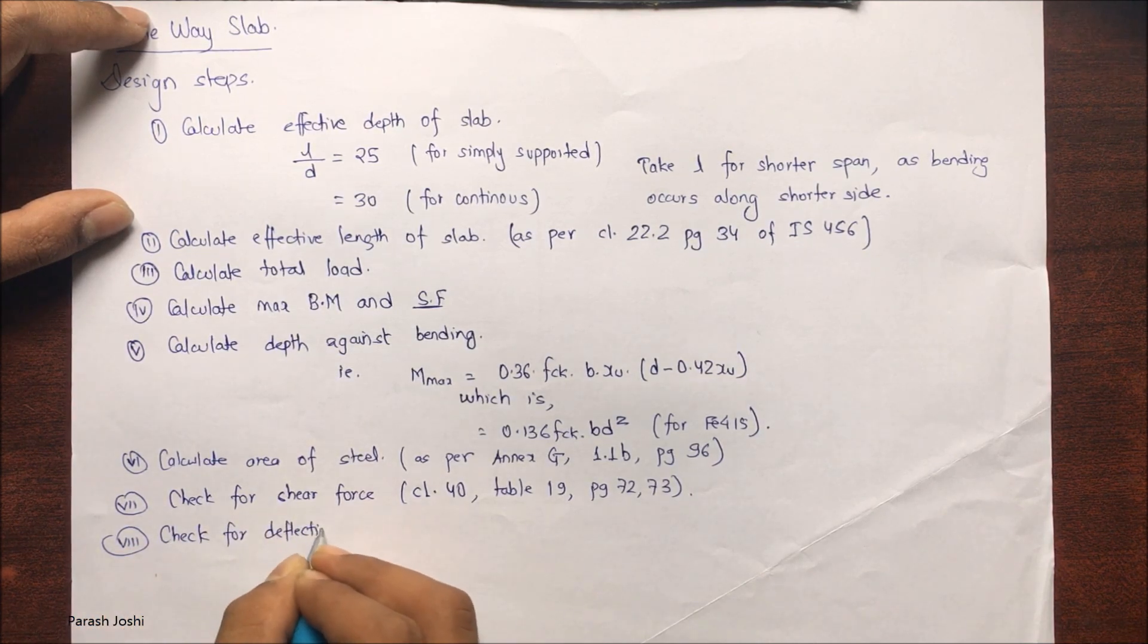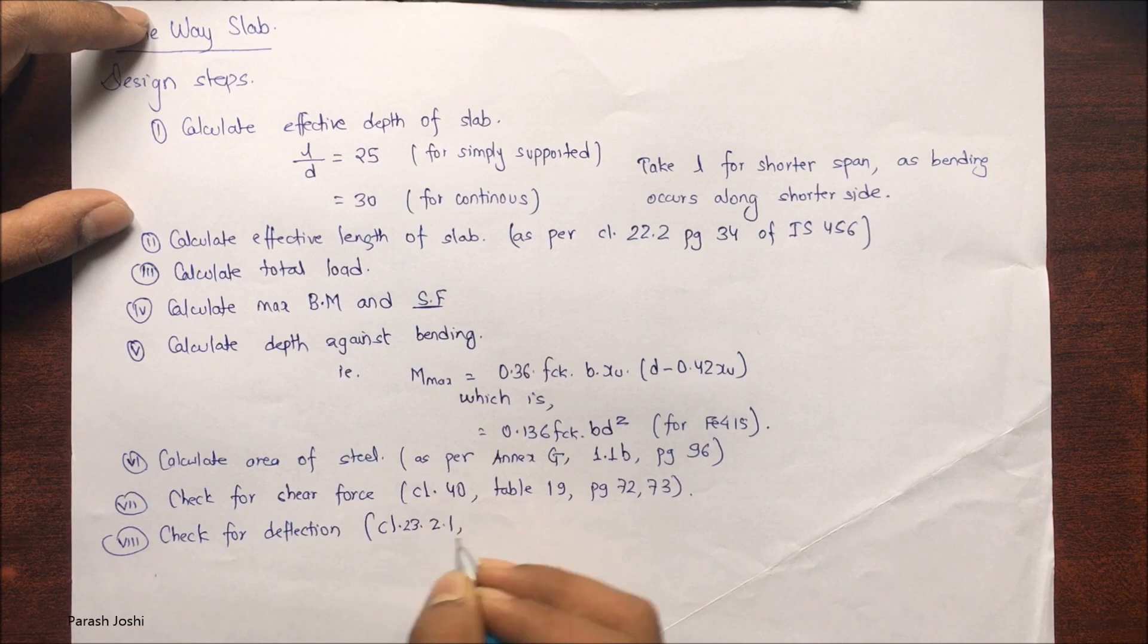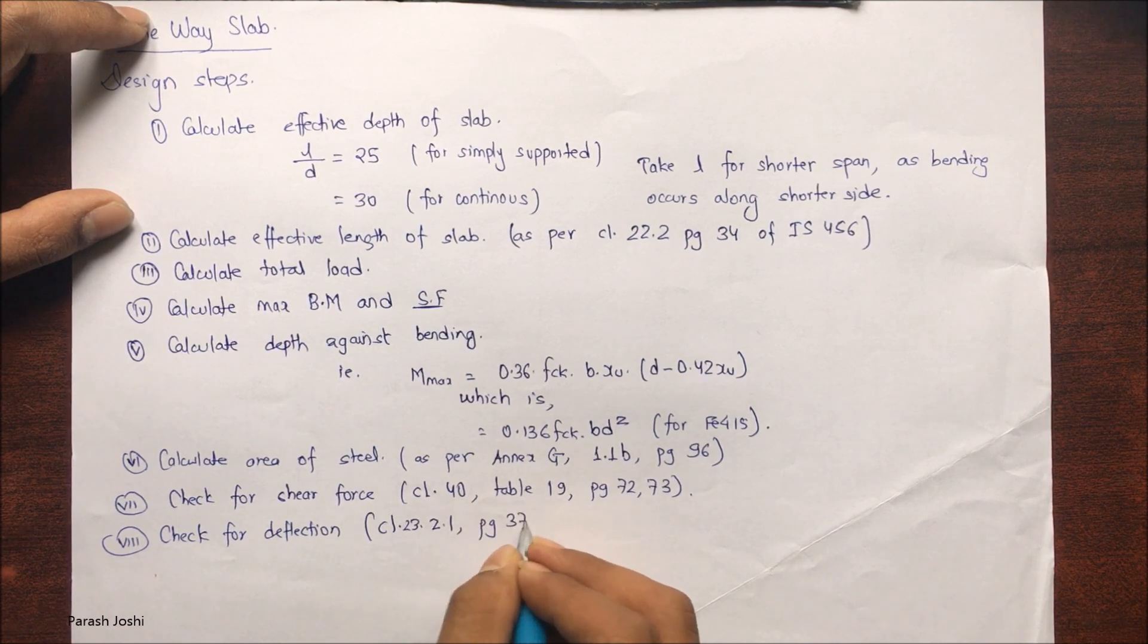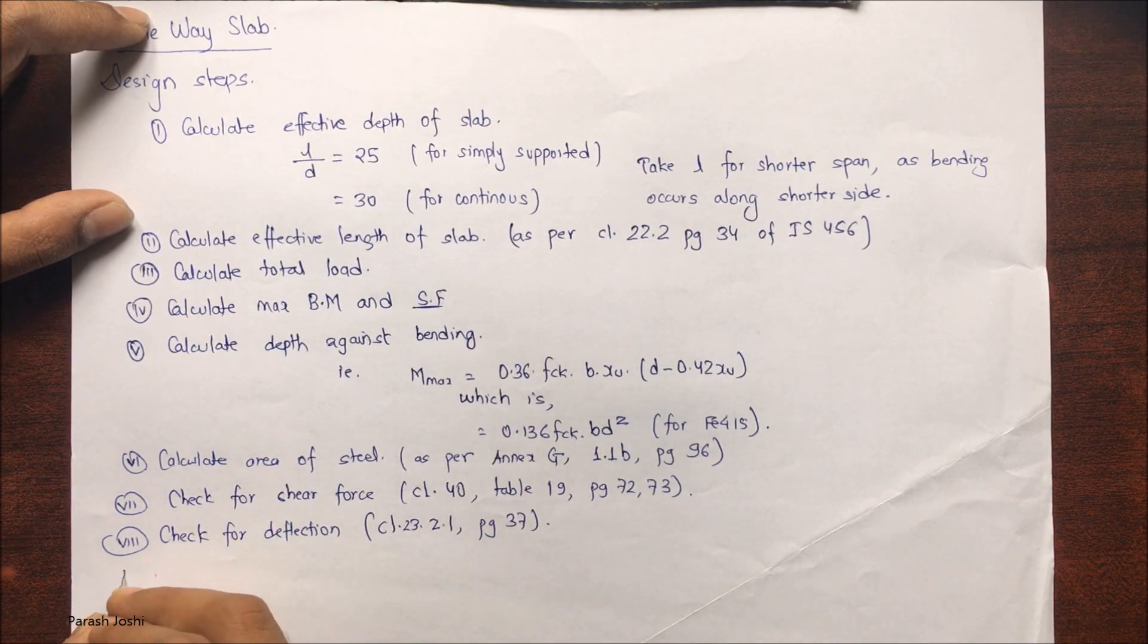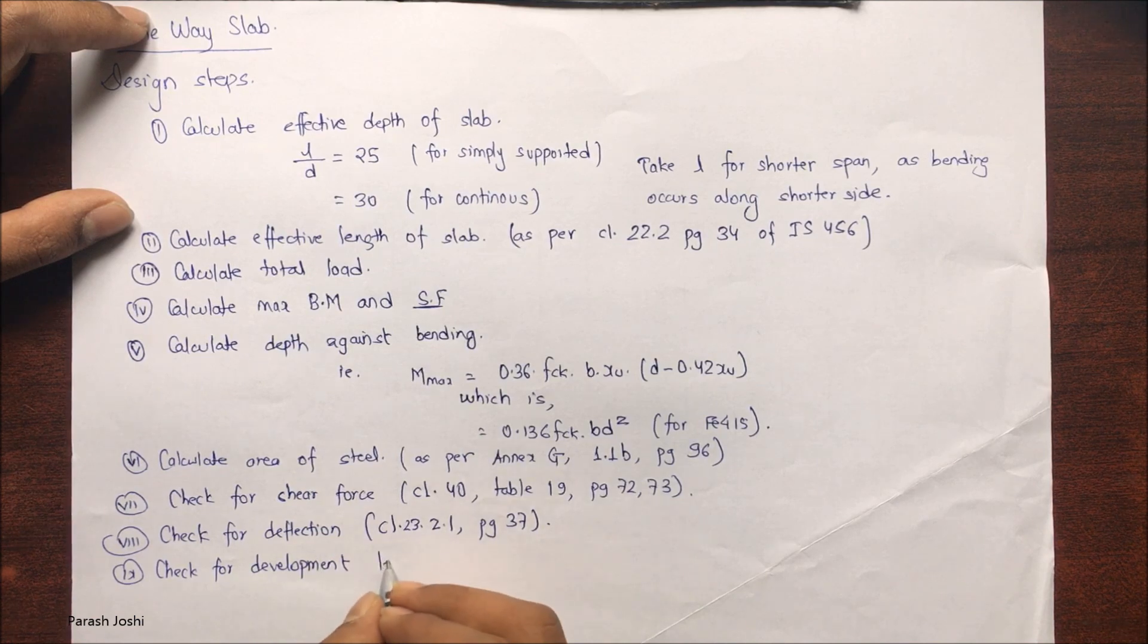The eighth step is to check for deflection criteria, whether the depth and the length ratio is sufficient to satisfy the deflection criteria. This is also from page 37 of IS 456.